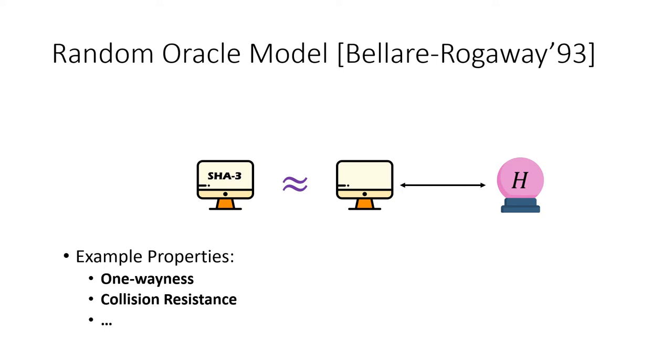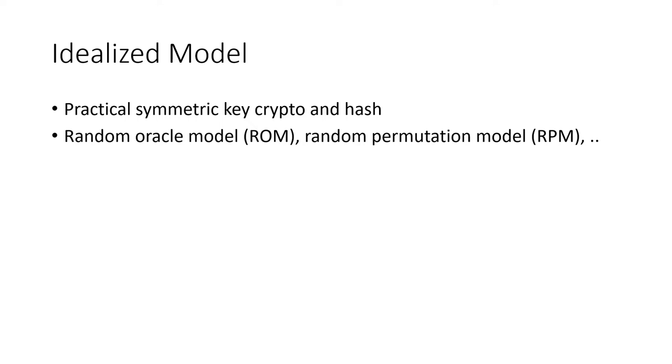Random oracle model has many important cryptographic properties, including one-wayness and collision resistance. Security bounds in idealized models provide essential and heuristic justification and guidelines for their security in the standard model.